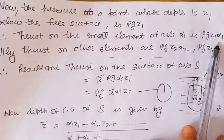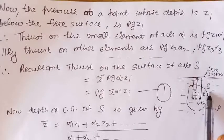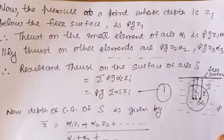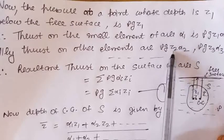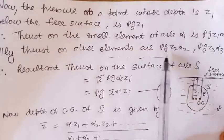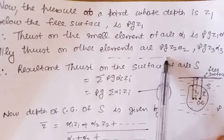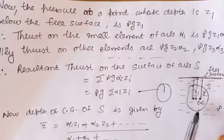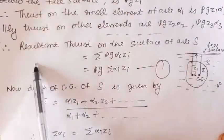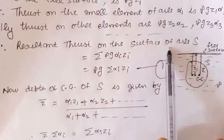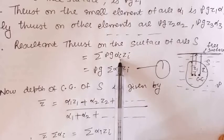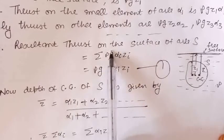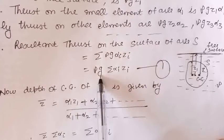Similarly, we can find the thrust on the other elements of surface S. For the element of area alpha 2, the thrust is rho into g into Z2 into alpha 2. In general, on the element alpha i, the thrust is rho into g into Zi into alpha i. The resultant thrust on the surface of area S is given by the algebraic sum of thrusts on all area elements, which is summation of rho into g into alpha i into Zi. Since rho and g are independent of i, they can be taken out of the summation.